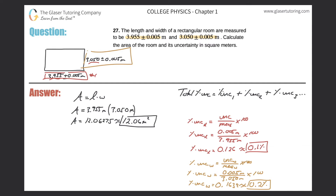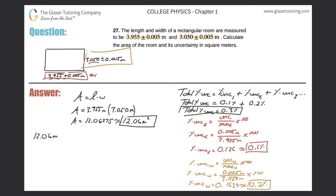So we found the percent uncertainty of the length and the percent uncertainty of the width. Now we can find the total percent uncertainty associated with both. We need both the length and the width because we calculated the area, and the area included the length and the width. The percent uncertainty of the length was 0.1%, and the percent uncertainty of the width was 0.2%. Adding those together, the total percent uncertainty is 0.3%. So the area with its associated percent uncertainty is 12.06 meters squared plus or minus 0.3%.